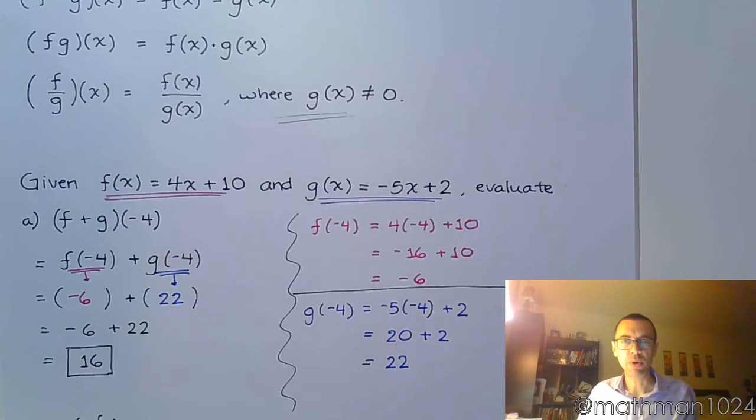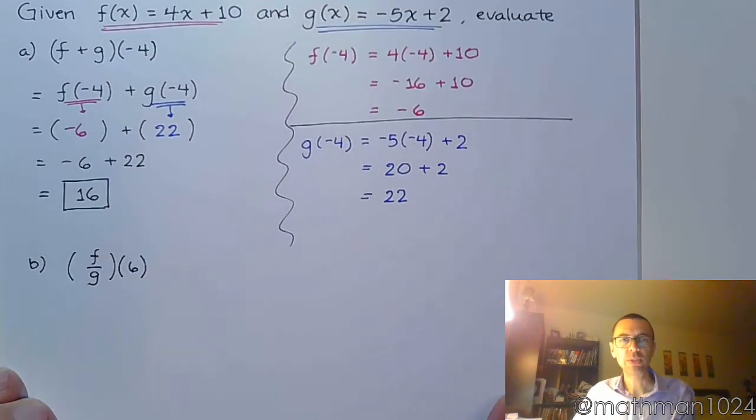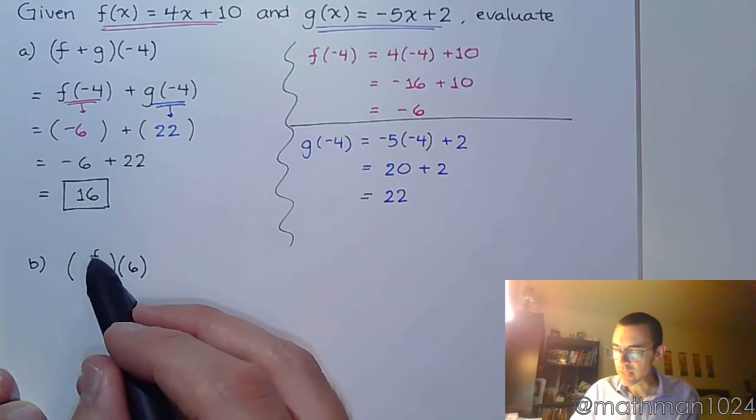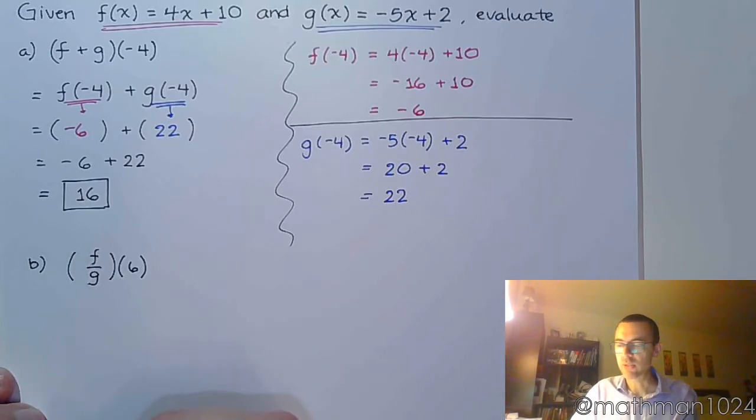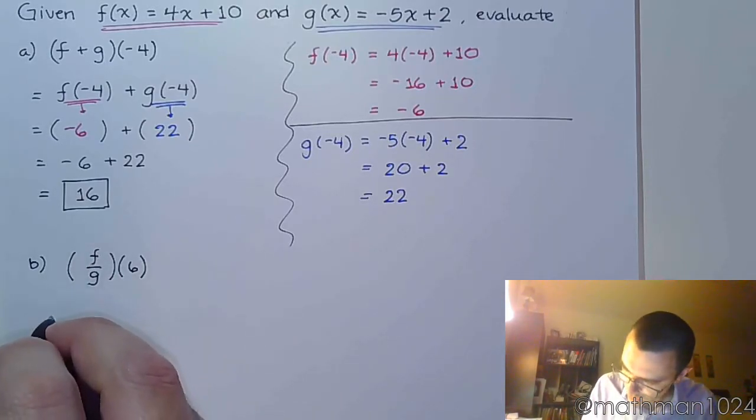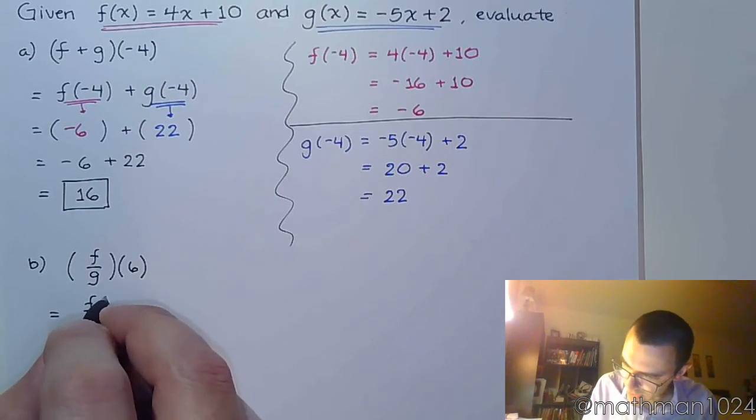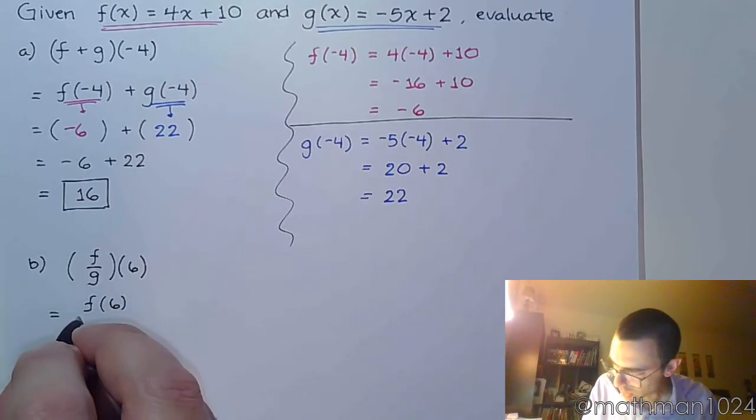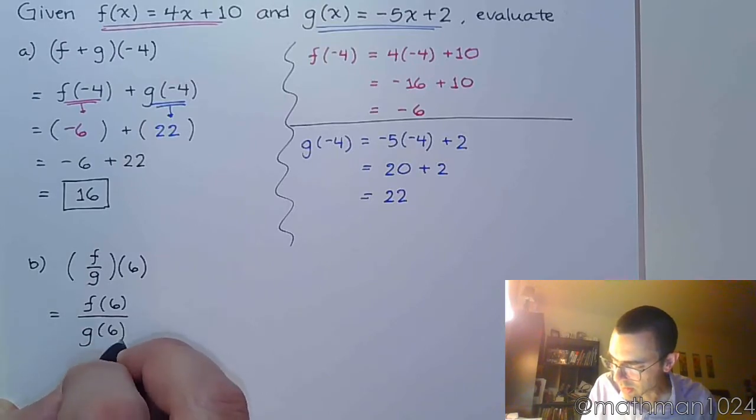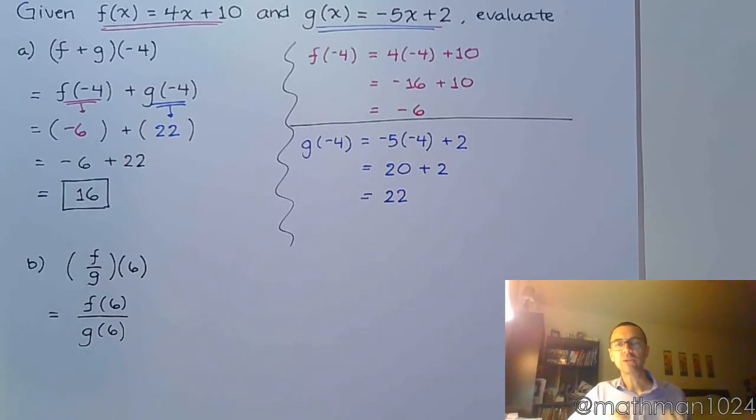In this next part, part b, still using these same two functions, f and g, it says find (f/g)(6). So, that means that we need to find f(6). Find g(6). Now, once we find those guys, we're just going to do a division.